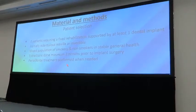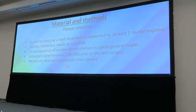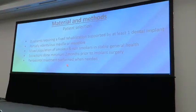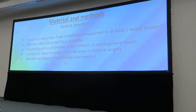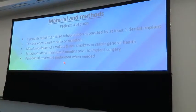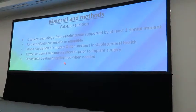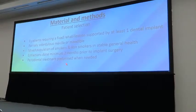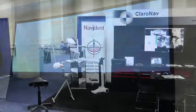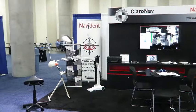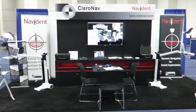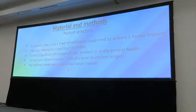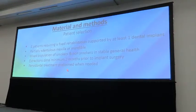For patient selection, patients were selected for fixed rehabilitation with at least one dental implant. Partially dentured maxillas or mandibles were selected. The population included a mix of smokers and non-smokers in general good health. Extractions were done a minimum of two months prior to implant surgery, and periodontal treatment was performed throughout.